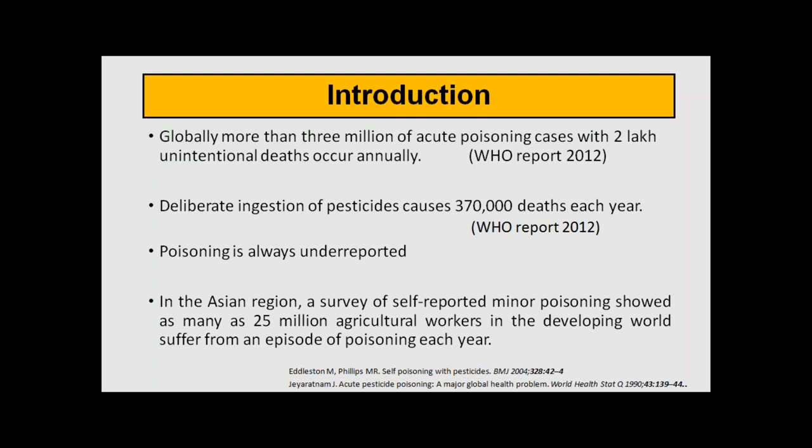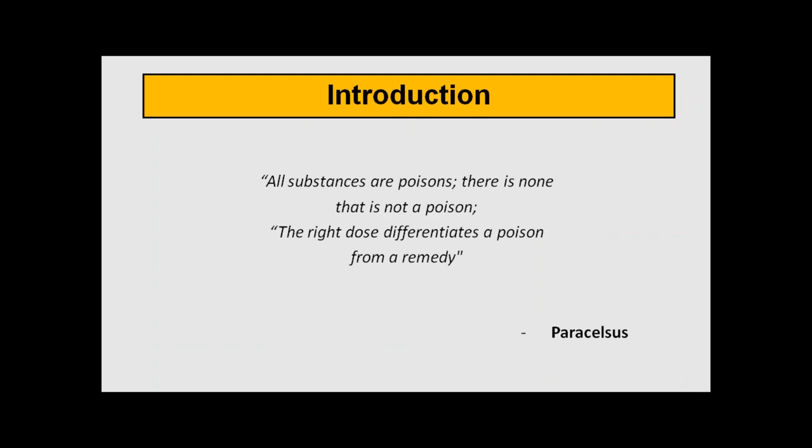If you look at the global load of poisoning, almost 3 million acute poisoning cases are reported and almost 200,000 unintentional deaths occur annually. The unfortunate part is that poisoning is always underreported — because most commonly, by the time you realize poisoning has occurred, a lot of mortality and complications have already happened, or for suicidal or homicidal reasons, it is not reported at all.